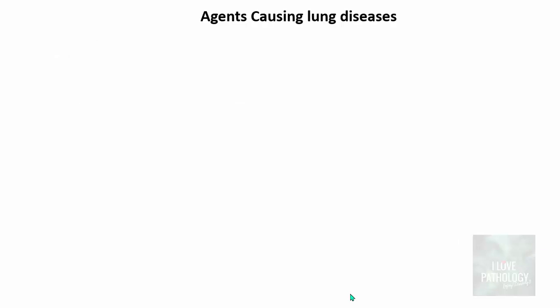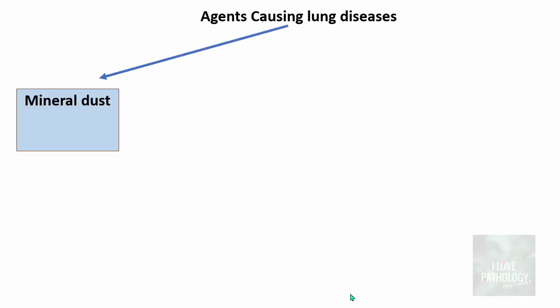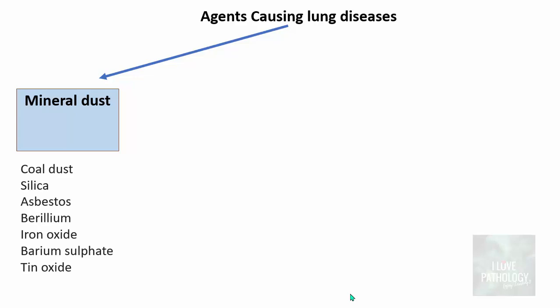The agents which can cause lung disease are broadly categorized into mineral dust, which includes coal dust, silica, asbestos, beryllium, iron oxide, barium sulphate, tin oxide, and so on.